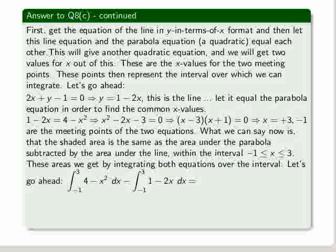So we get this integral. We integrate the parabola over minus 1 to 3, and then subtract that by the integral of the line, which is 1 minus 2x integrated over minus 1 to 3.